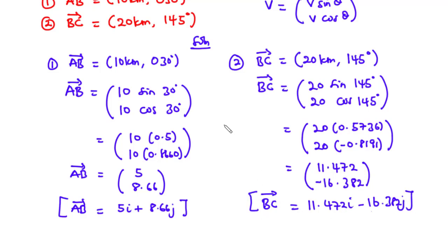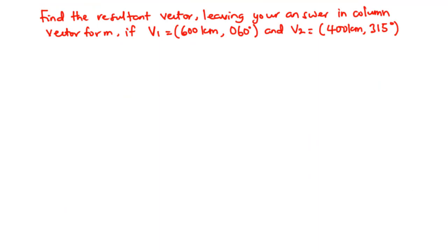Therefore vector BC equals 11.472i minus 16.382j. Now let's solve a typical example on how to find the resultant vector using resolution of vectors. We need to find the resultant vector in column vector form, where v1 is 600 kilometers on a bearing of 60 degrees and v2 is 400 kilometers on a bearing of 315 degrees. We will resolve both vectors as column vectors and then add their x and y components.